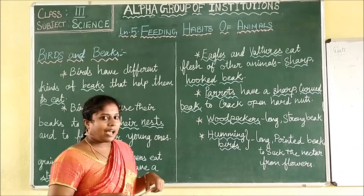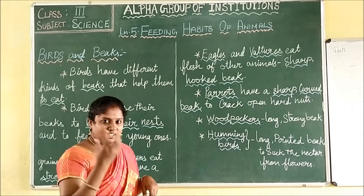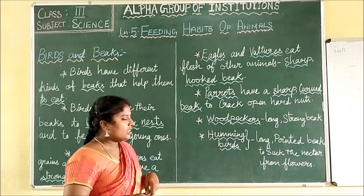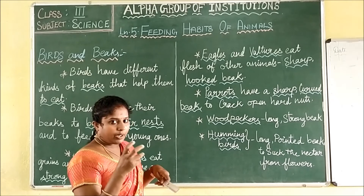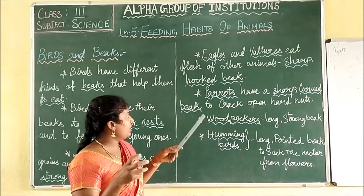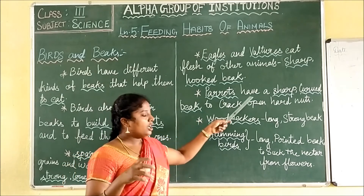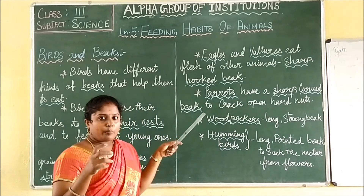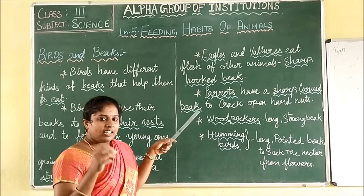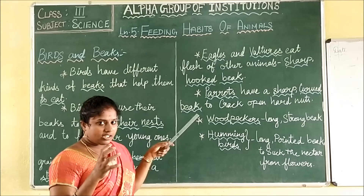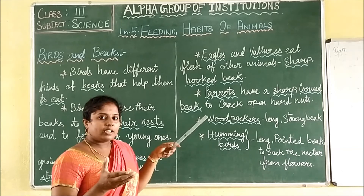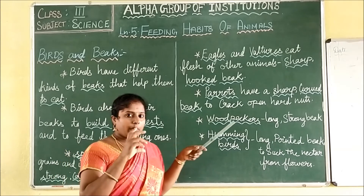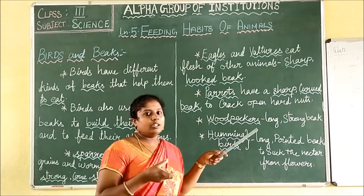Next, parrots. Parrots' beak will be different compared to other birds. Parrots have a sharp curved beak to crack open the nuts. Mostly they eat nuts, and to crack them open they will be having a sharp and curved beak.